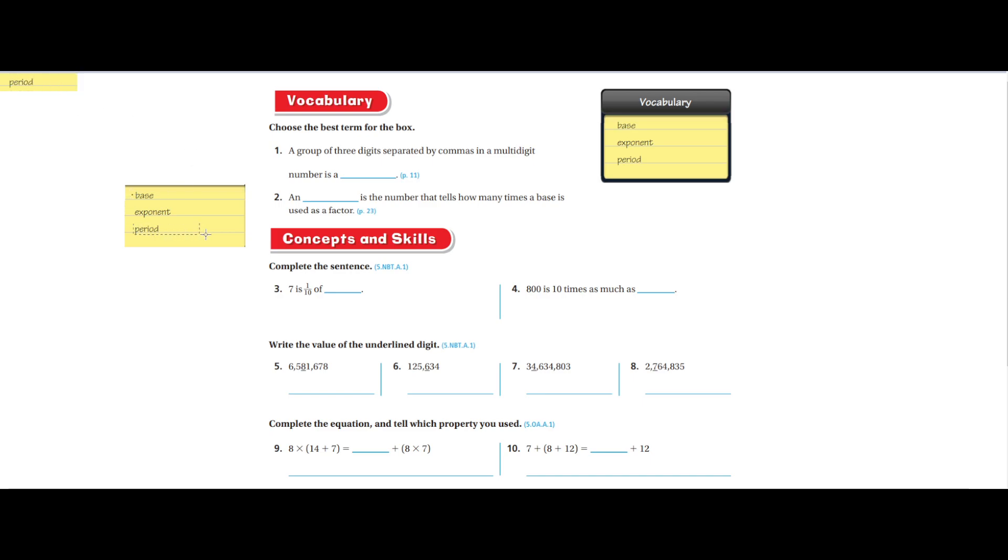And blank is the number that tells how many times a base is used as a factor. That's going to be an exponent. So let's take that, paste it in, put this over here, and now there we have the first vocabulary question done.